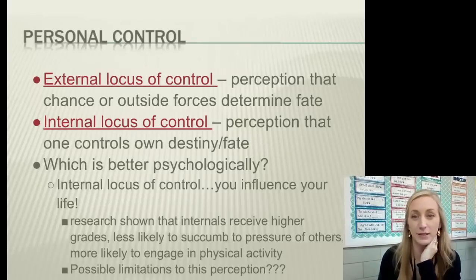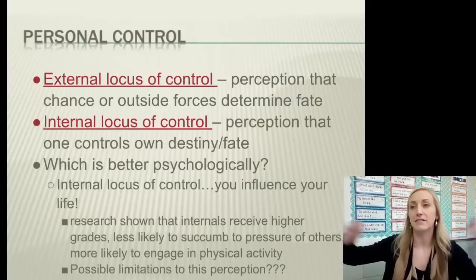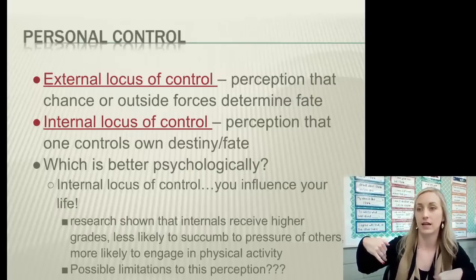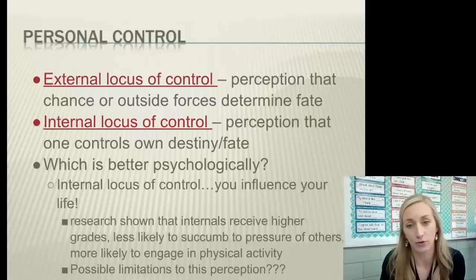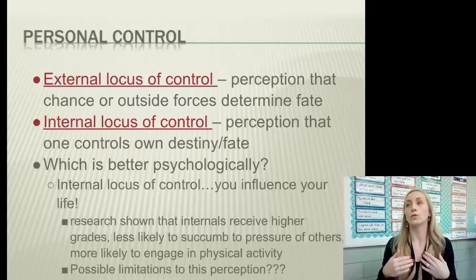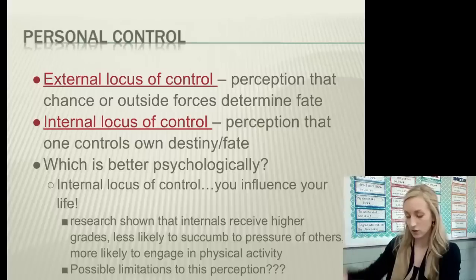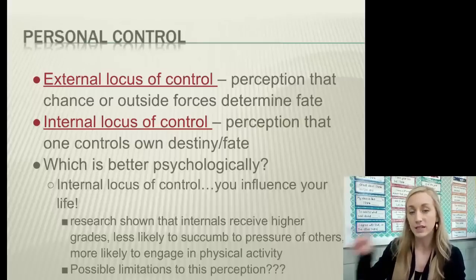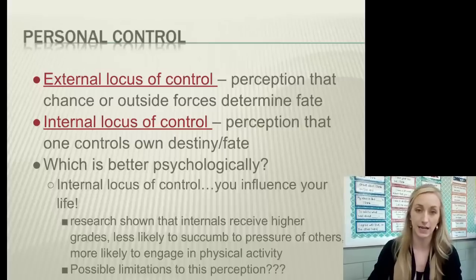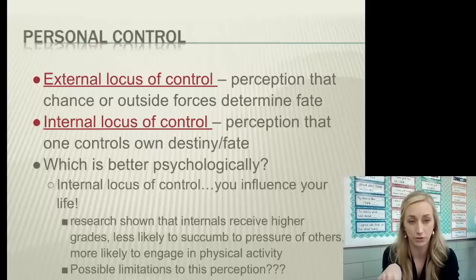External locus of control is the perception that chance or outside forces determine our fate — things happen to us. Whereas internal locus of control is the perception that one controls their own destiny and fate — I make things happen. What is going on right now is because I had a hand in it. A person is going to have either an external or an internal locus of control.